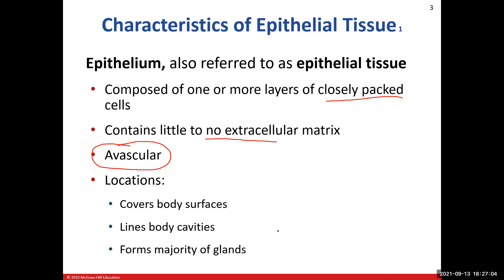A lot of the glands being epithelial has to do with fetal development. As we go through the different stages of fetal development — even before the fetus, when you basically look like a disc — certain areas of that outer coating are going to invaginate or push down deep into the tissue, and some of that tissue will form some of our glands.